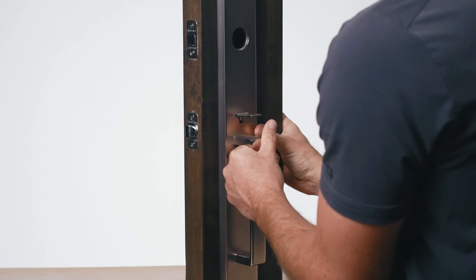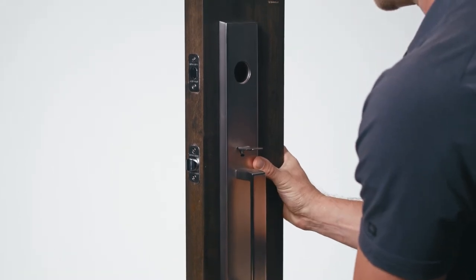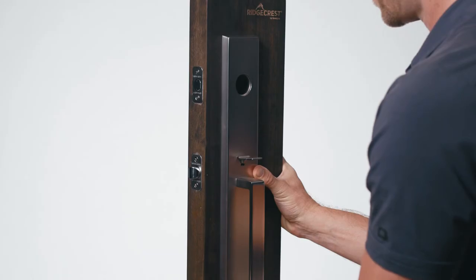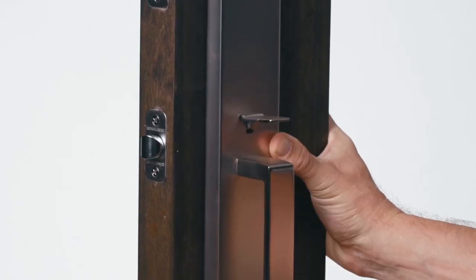Place exterior handle set plate onto the door. Ensure the spindle engages and seats in the latch properly. You'll know it's correct if you depress the thumb depressor and it operates smoothly.